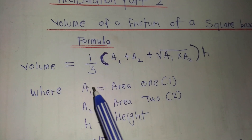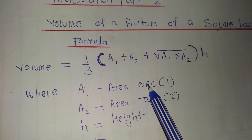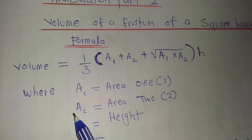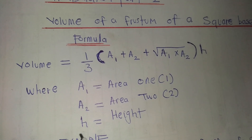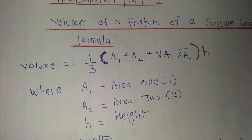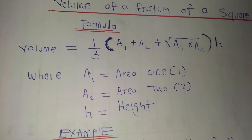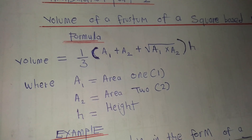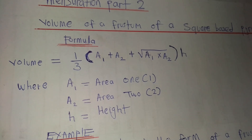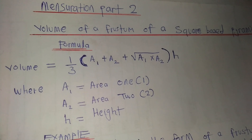Here, A1 represents area 1. Then A2 is area 2, and H is the height. This will be understood when you look at the diagram or the working example.